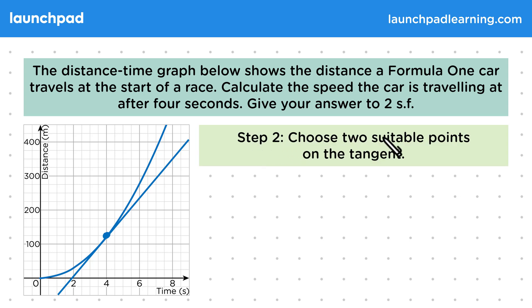For step 2, choose two suitable points on the tangent. When calculating a gradient, we should choose points that are easy to read and are far apart. Let's start by using the point where the tangent touches the curve. This was 120 metres at 4 seconds. We don't have to use this point, but it's a point that we know must be on the tangent, even if we haven't drawn it perfectly.